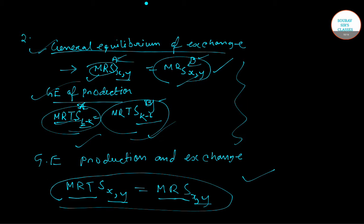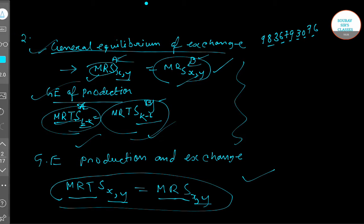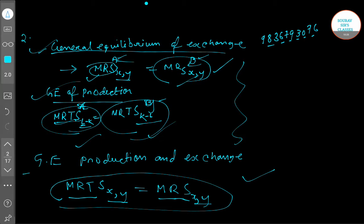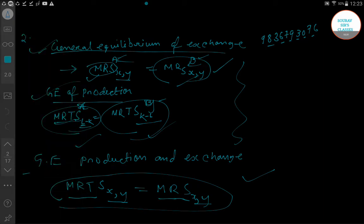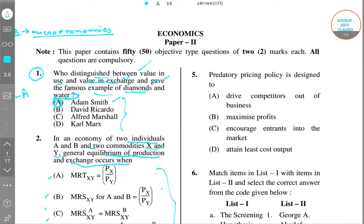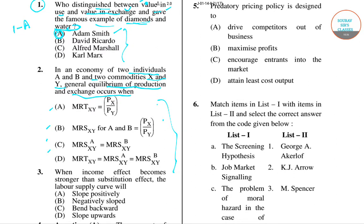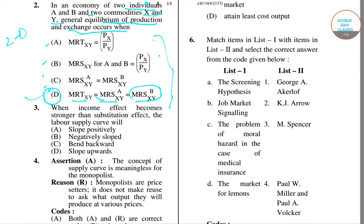For question number two, the right answer is option D — where MRT X,Y equals MRS A equals MRS B. Now we will go to question number three.